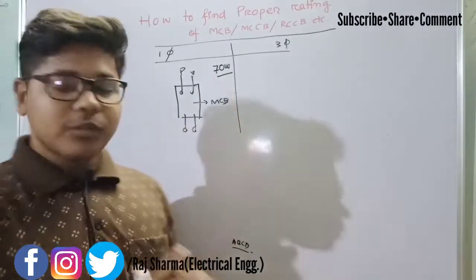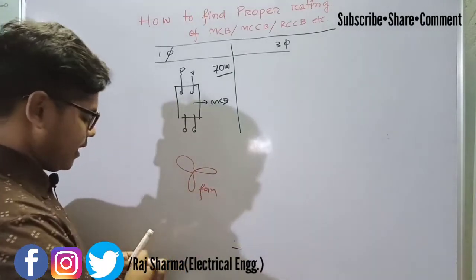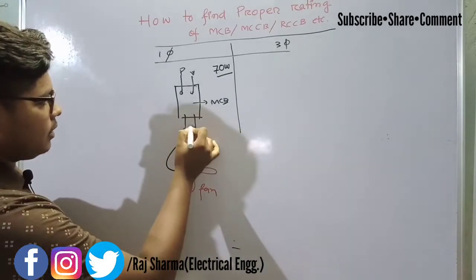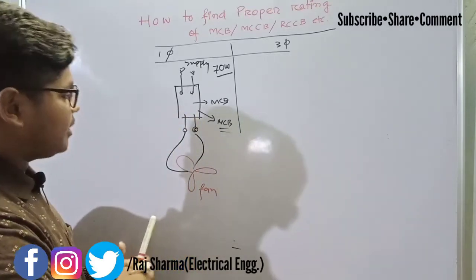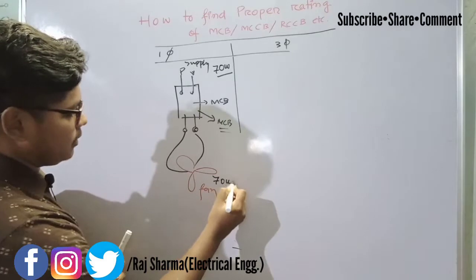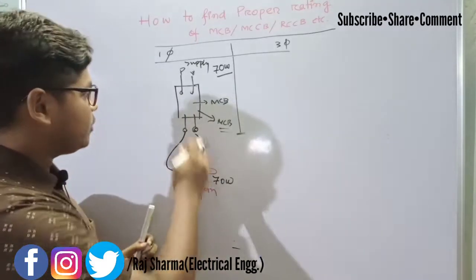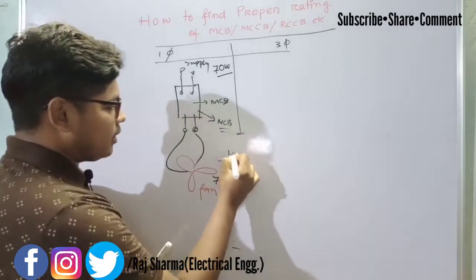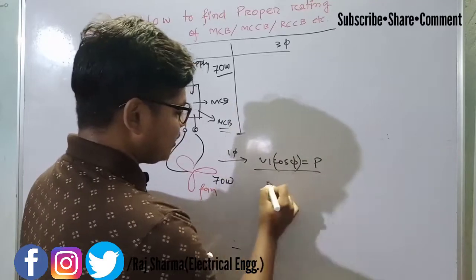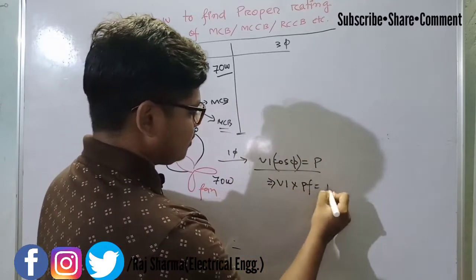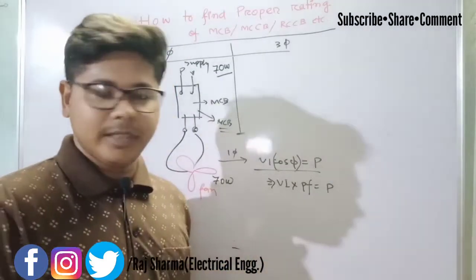In the case of a fan, we use single phase and the power is around 70 watt. The phase and neutral are connected to the fan with the MCB in between the supply and the fan. The MCB is providing power to the fan at 70 watt. In case of single phase, we use the formula: V × I × cos φ = Power, where cos φ is the power factor.